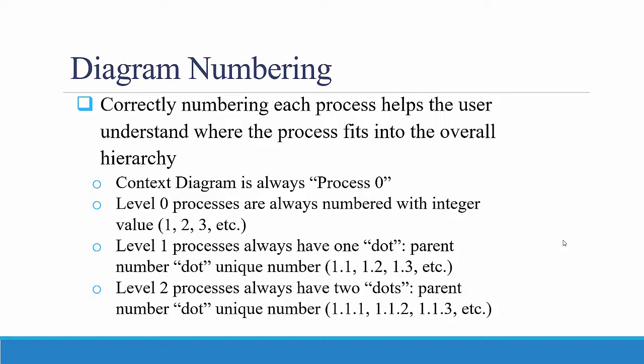Level 1 processes always have one dot: parent number dot unique number, 1.1, 1.2, 1.3, corresponding to the level 0 process numbers on the right of the dot.